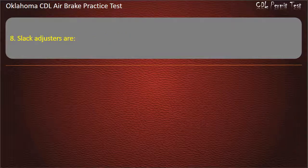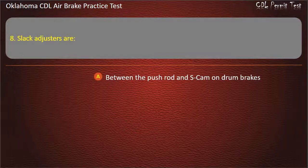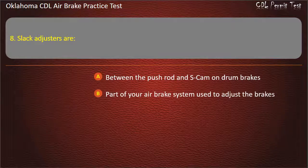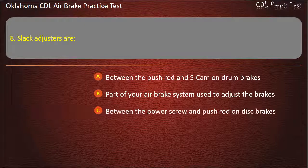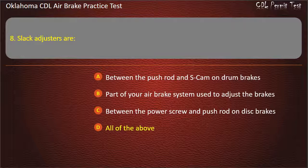Question 8. Slack adjusters are: between the pushrod and S-cam on drum brakes; part of your air brake system used to adjust the brakes; between the power screw and pushrod on disc brakes; or all of the above. Answer: All of the above.